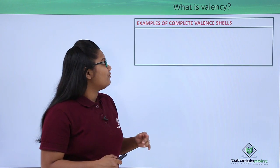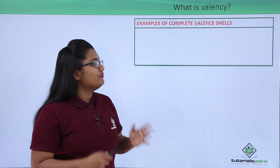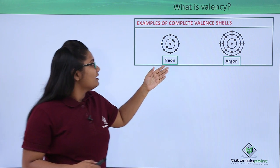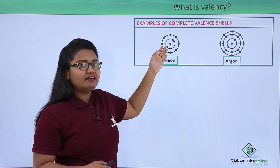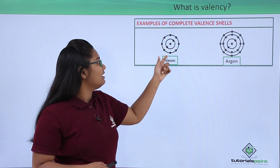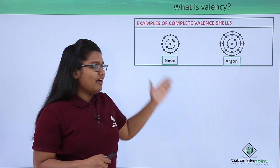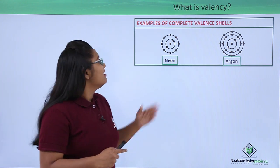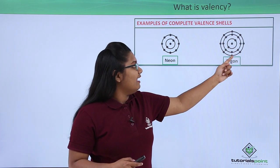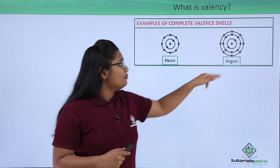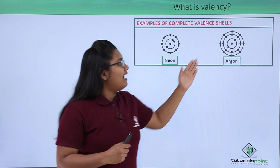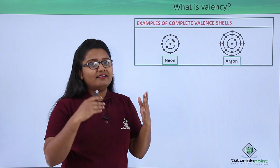Let's have some examples of elements which have complete shells. The first example is neon. We can see that it has two shells — K shell and L shell — and its outermost shell is the L shell which has totally eight electrons, so it is said to have an octet. The next example is argon, which has three shells: K, L and M shell. Its outermost shell is the M shell, which also has eight electrons in total, so argon also has an octet.